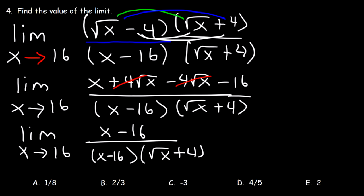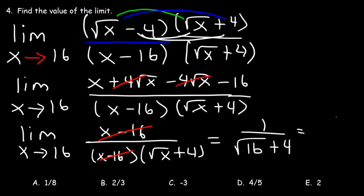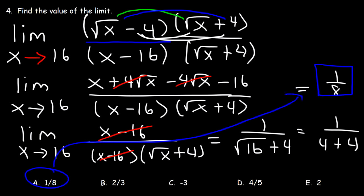So we can see that the two middle terms add up to 0 and they're going to disappear. So now what we have is the limit as x approaches 16 of x minus 16 divided by x minus 16 times the square root of x plus 4. So now we can cancel x minus 16. And at this point we can replace x with 16. So this is going to be 1 divided by the square root of 16 plus 4. The square root of 16 is 4, and 4 plus 4 is 8. So the answer is 1 divided by 8, which corresponds to answer choice A.